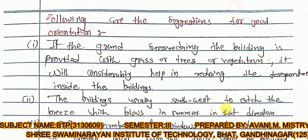Buildings are usually oriented towards the south-west to catch the breeze that blows in that direction during summer. The arrangement of rooms should also consider the south-west direction so that natural breeze available in summer can be utilized. This concept relates to 'aspect' — which direction different rooms like the living room, kitchen, and dining room should face.